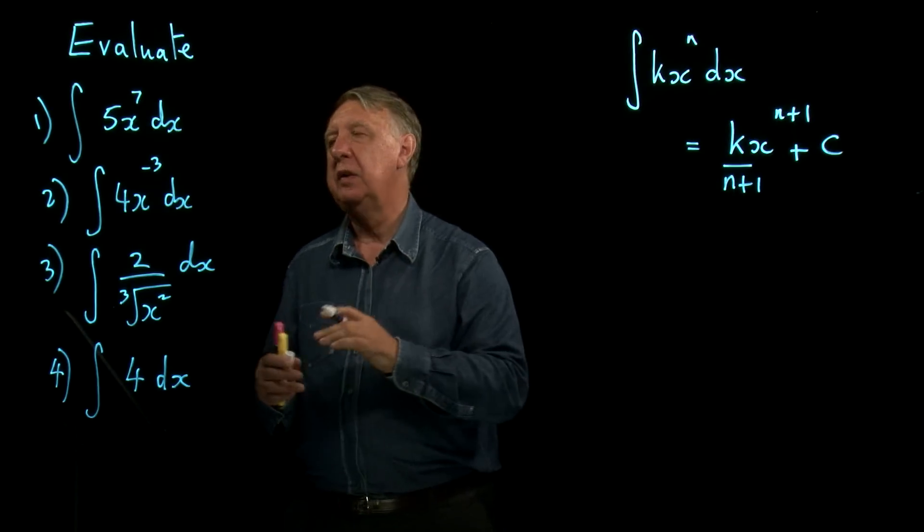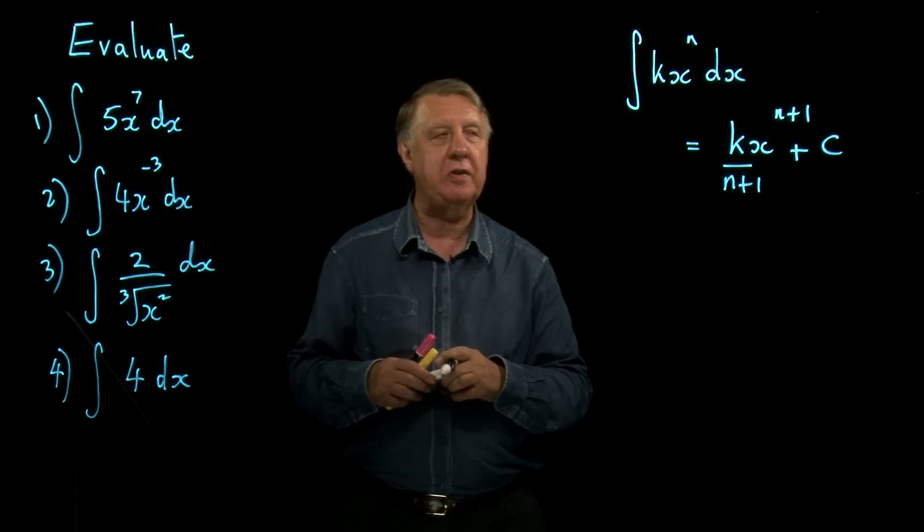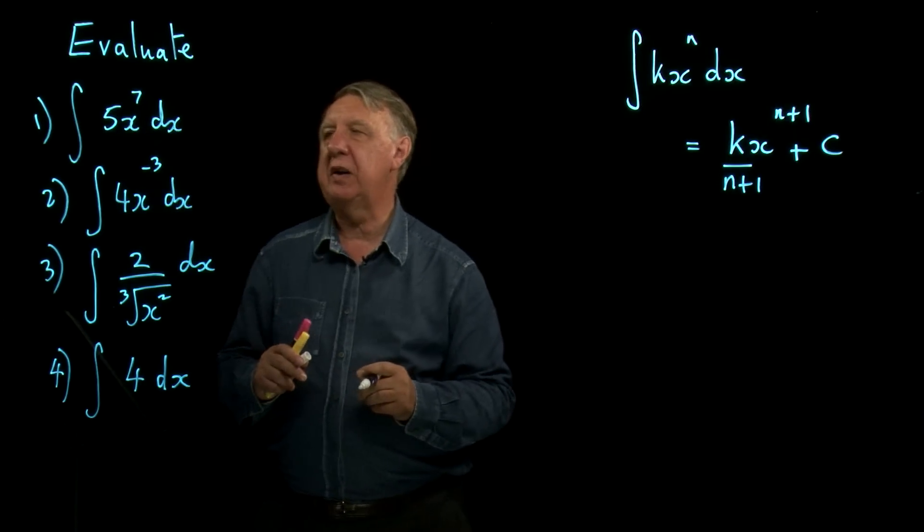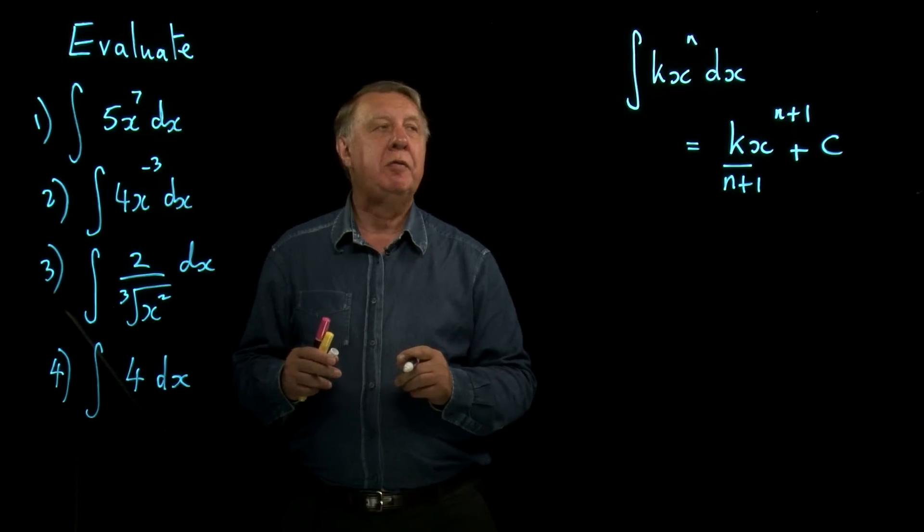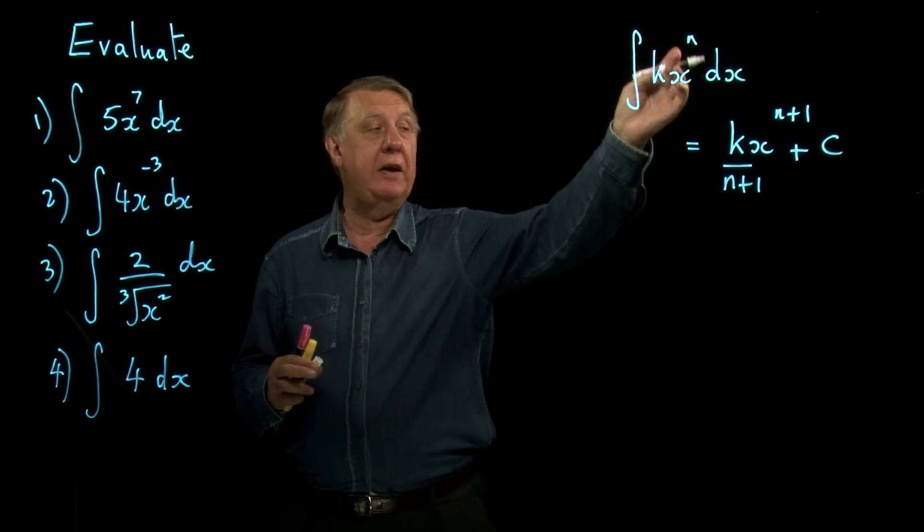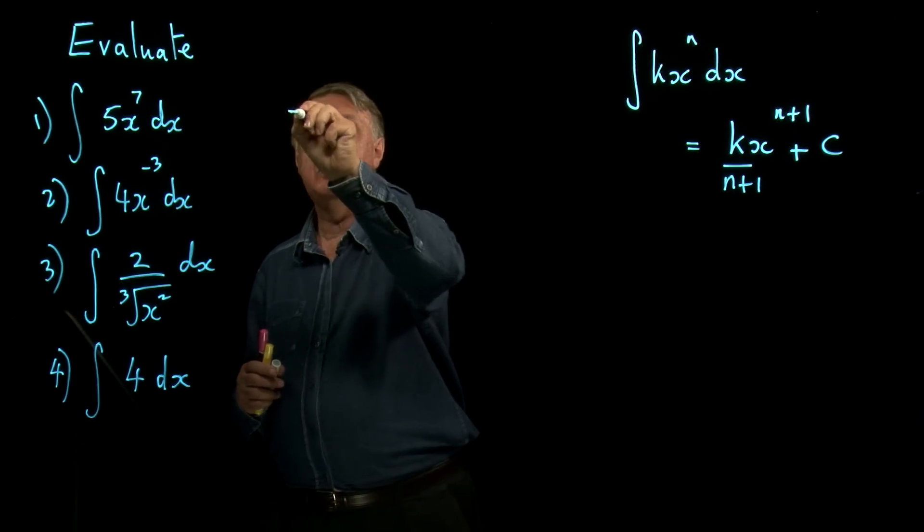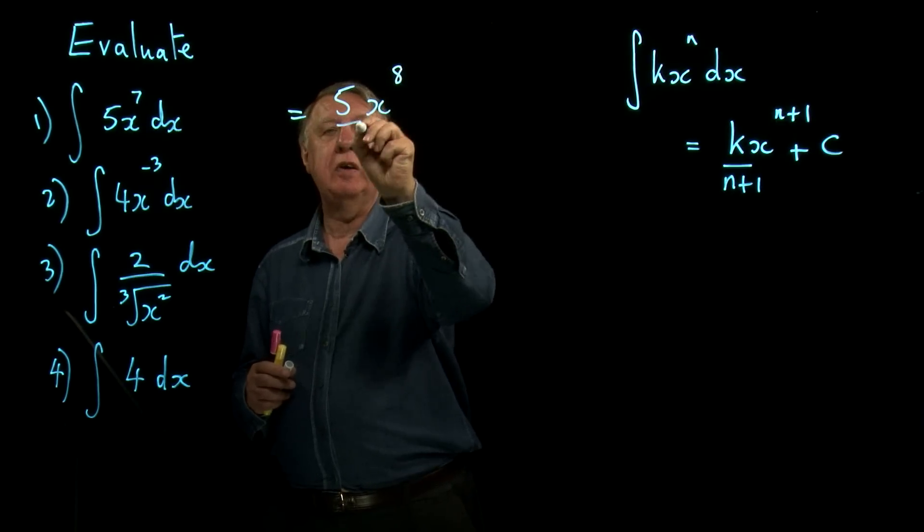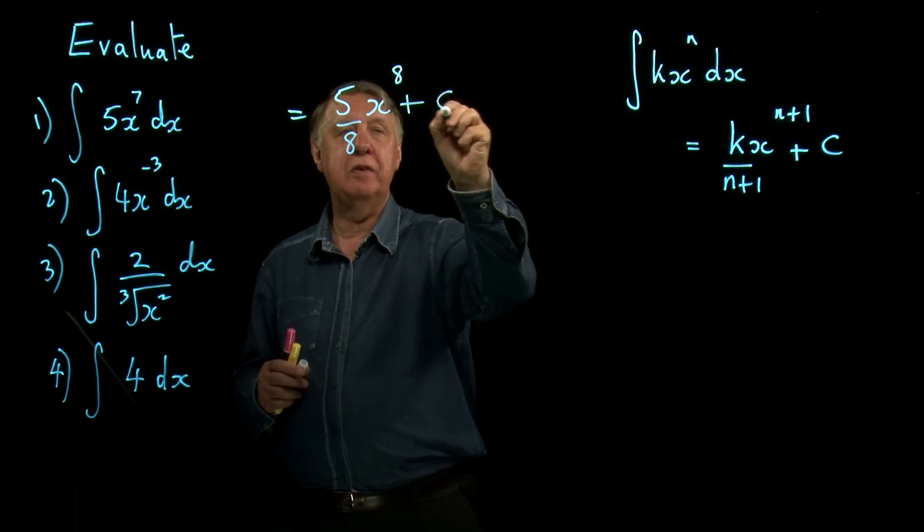So again this is another opportunity for you to just tighten up the skills involved with that. So the first one here then, 5x to the 7, very very simple application. k is 5 and n is 7 so the answer is 5x to the 8 over 8 plus c.